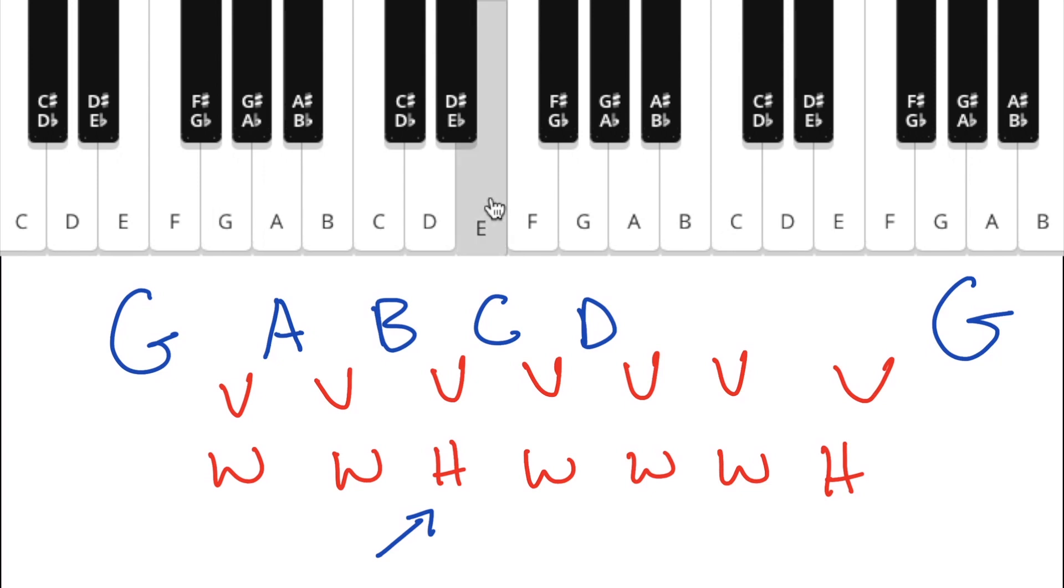Then up a whole step to E. Now we need to go up a whole step. From E to F brings us to a half step. So we need to go from E, skipping a note, up to this note.